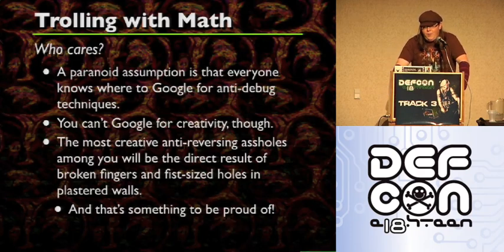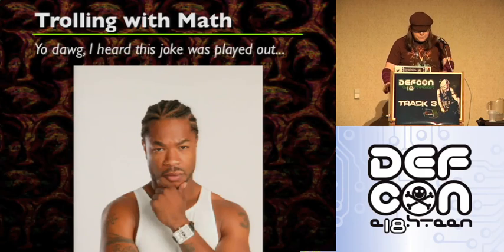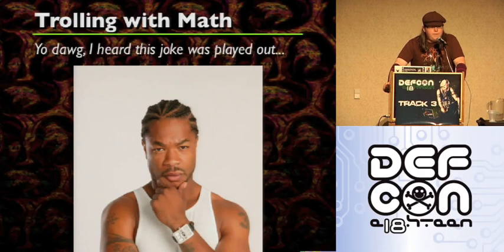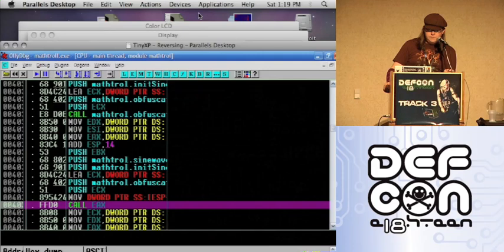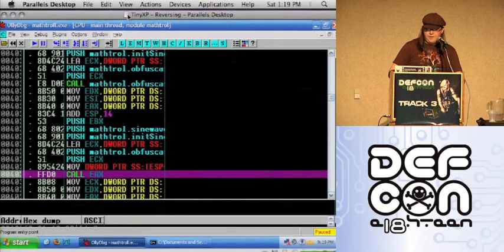You're really just trying to get them away from your code. That's all it really is. So here's what I'm going to do — I'm going to take the obfuscation function and I'm going to obfuscate it. Then I'm going to take the obfuscated version and obfuscate the obfuscator again. So let's pull up the code. Here is math_troll.exe, which essentially contains my sine wave example.